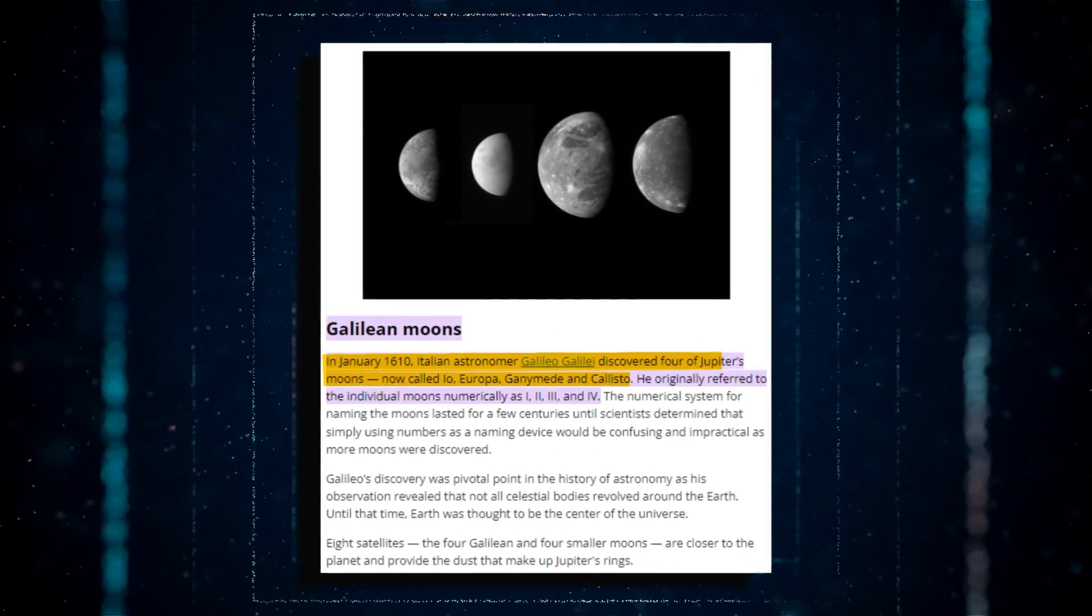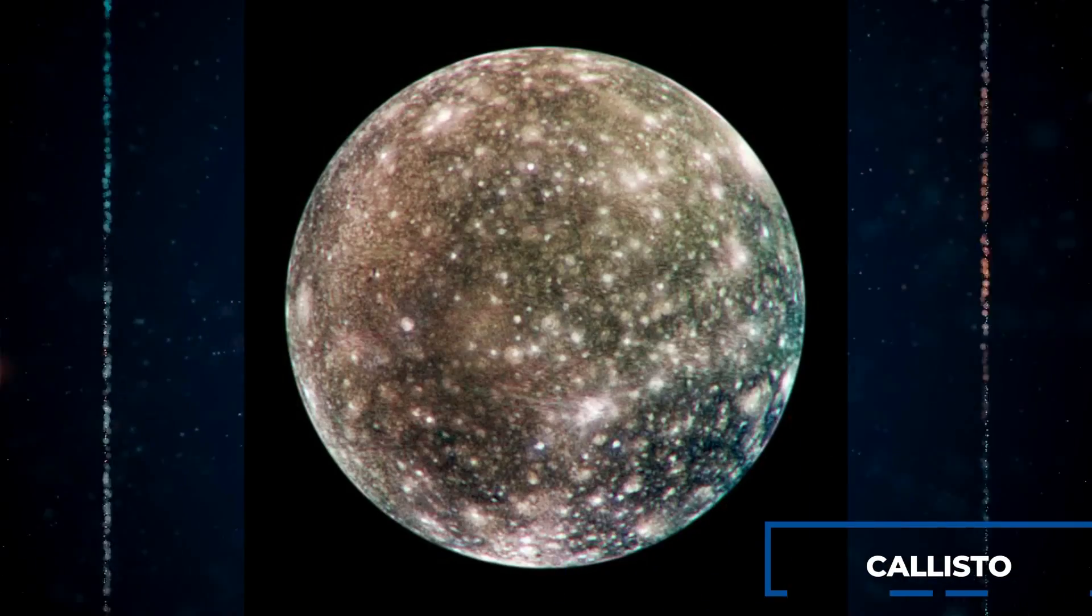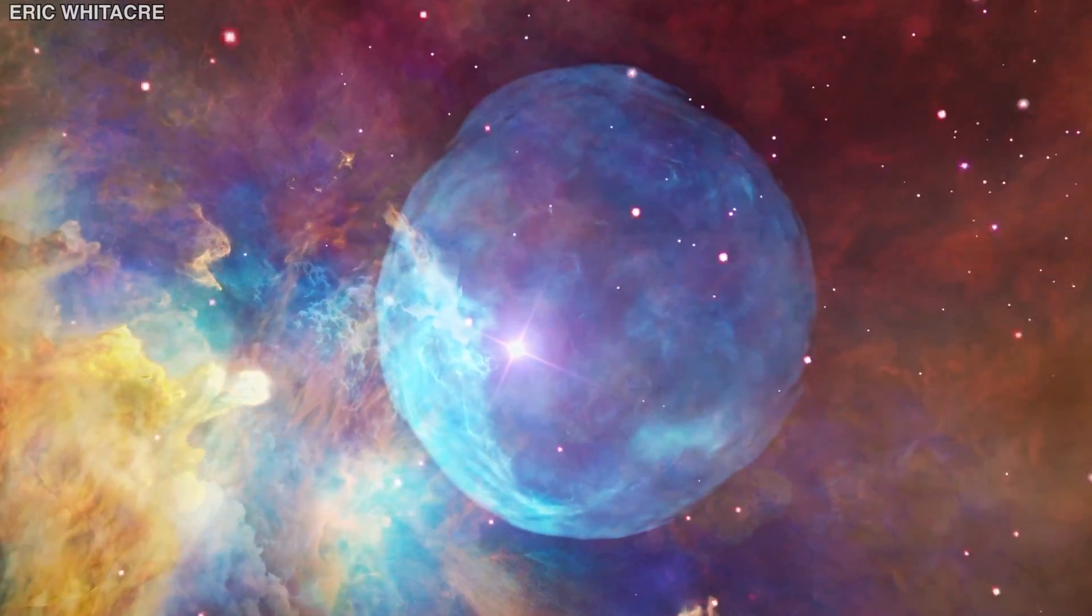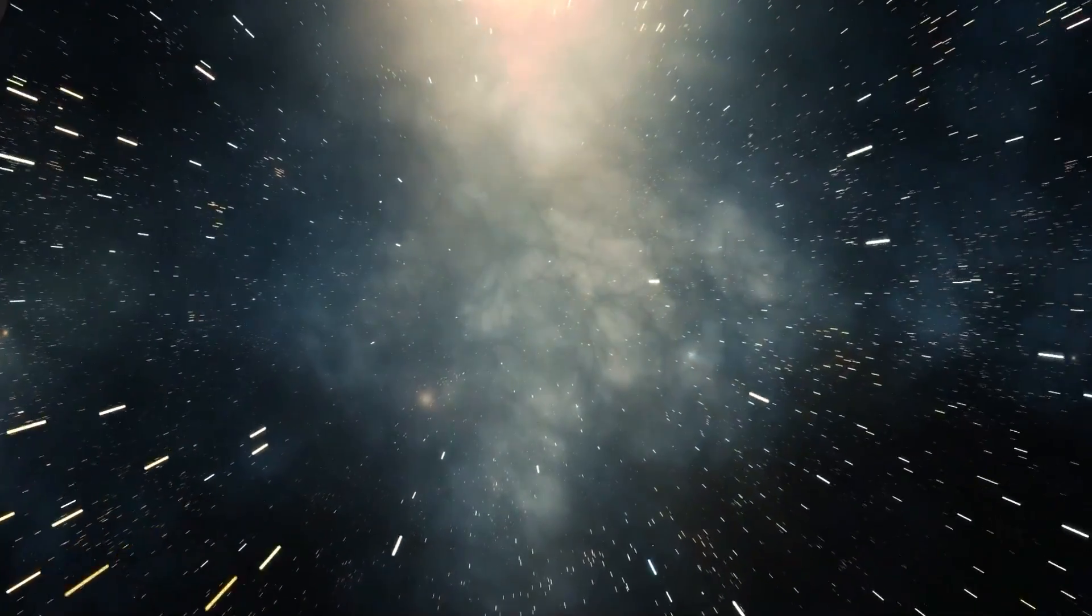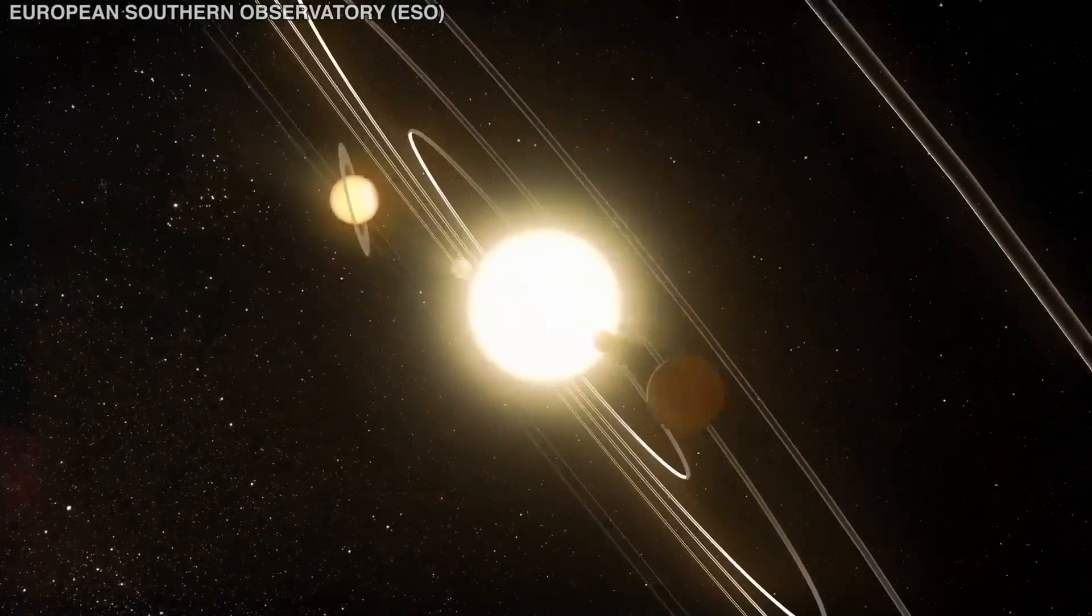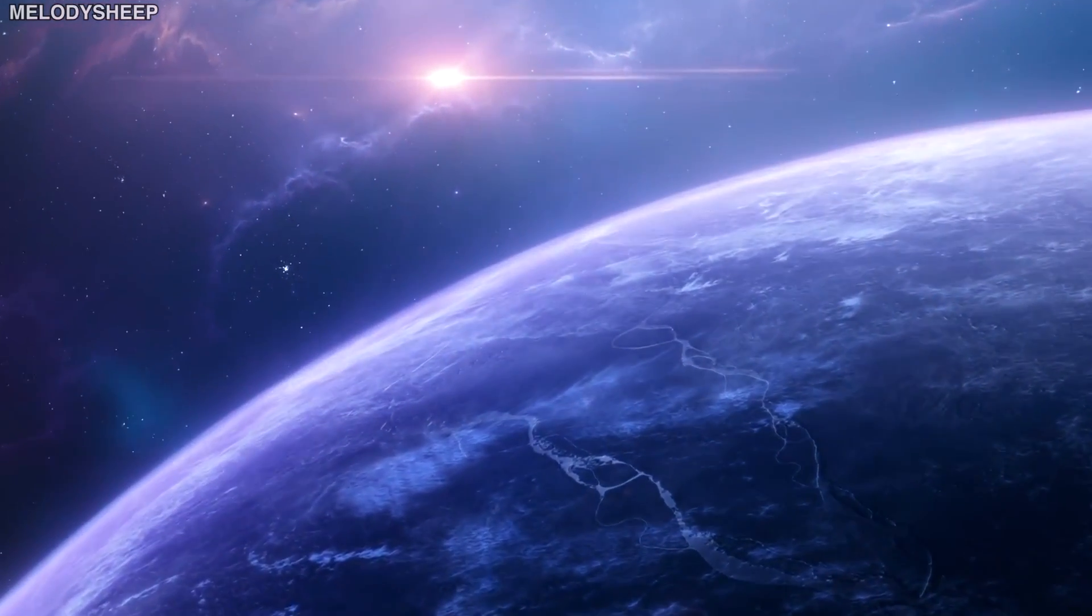Galileo's 1610 discovery of Jupiter's four massive moons – Io, Europa, Ganymede, and Callisto – revolutionized our understanding of the cosmos and our place within it. These observations, which marked the first time celestial bodies were discovered orbiting a body other than Earth, supported the Copernican notion that Earth was not the center of the universe.